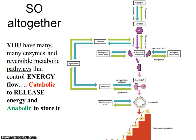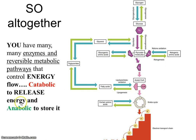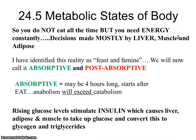The big picture is that you have many enzymes and reversible metabolic pathways that control energy flow. Catabolic reactions release energy and anabolic reactions store it — the reversible arrows show this. When there is plenty of energy, store it. Each arrow represents many different chemical reactions, and this is what allows you to have such a diverse diet and survive in many different environments, finding something to eat and using it for both energy and building blocks.